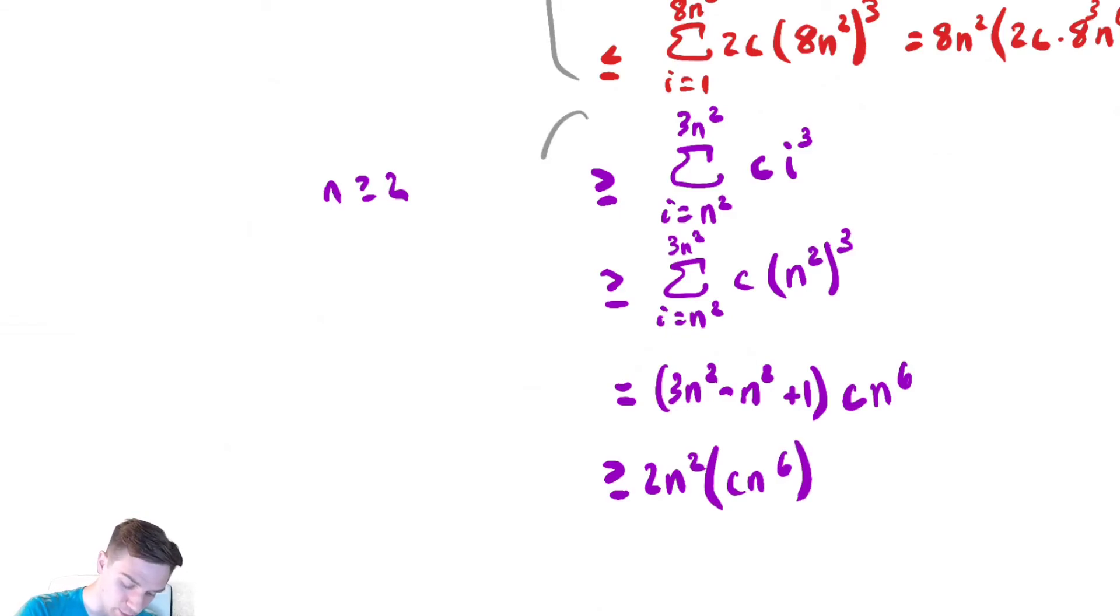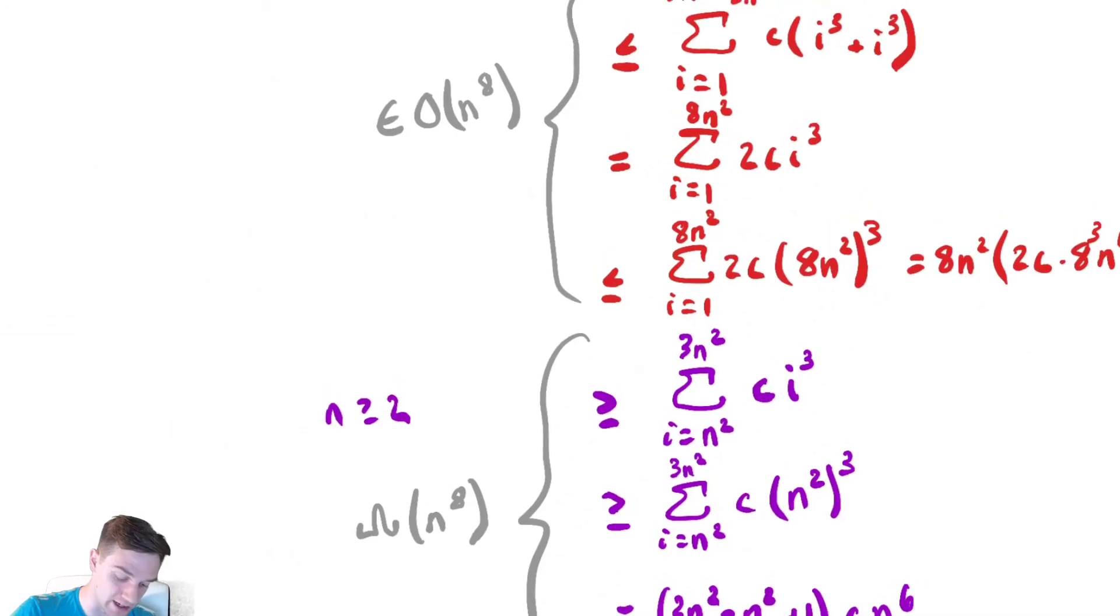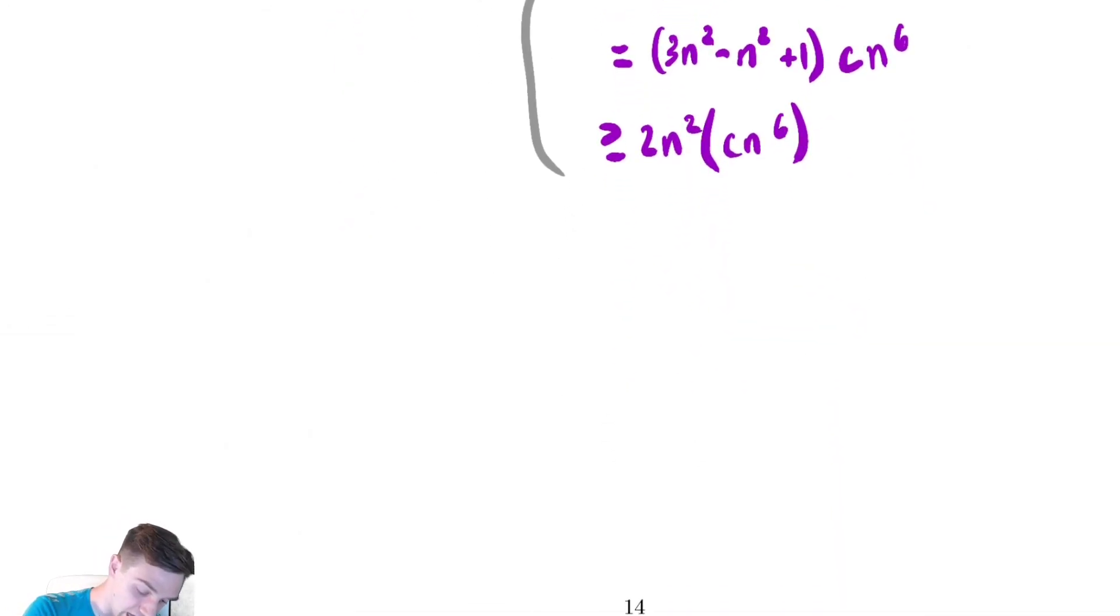So all of this stuff in purple is similar to before enough to give me that we are in big omega of n to the 8th. So if we are in big O of n to the 8th and big omega of n to the 8th, I had better hope we are in big theta of n to the 8th. So t of n is theta of n to the 8th.